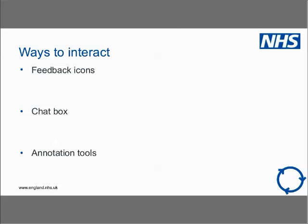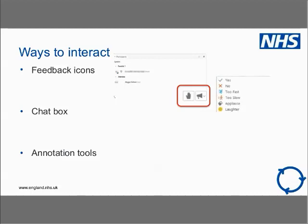Just a quick reminder on WebEx and the ways we can interact — some of the functions we'll use throughout this webinar and the subsequent programme. First, if you can see the feedback icons on the right-hand side of the screen near the attendees' names, you'll see a little hand icon. You can raise your hand if you need help or want to speak. There's also a megaphone icon — clicking it brings up a menu of different ways to interact: green ticks, red crosses, too fast, too slow, and applause.